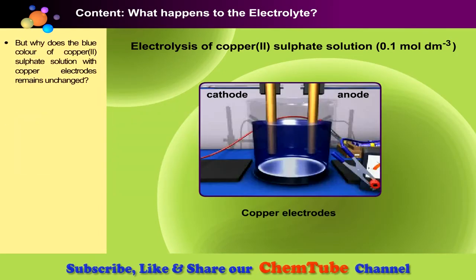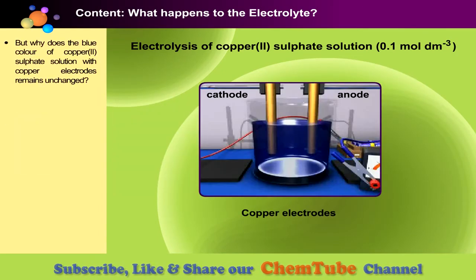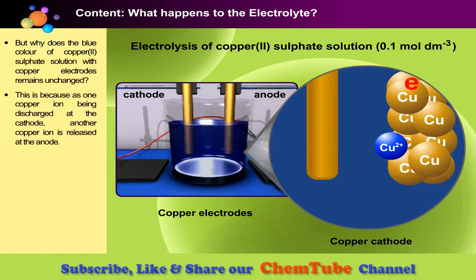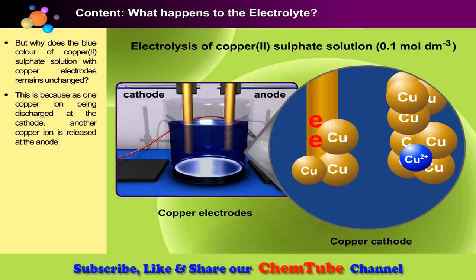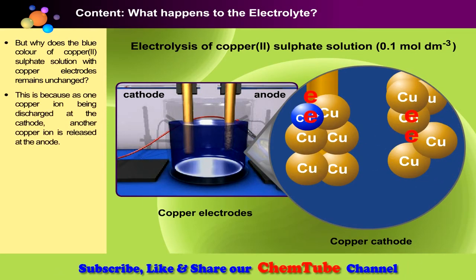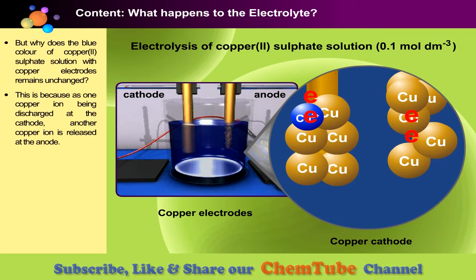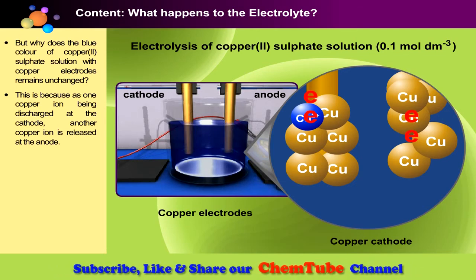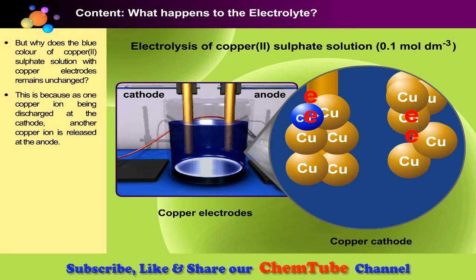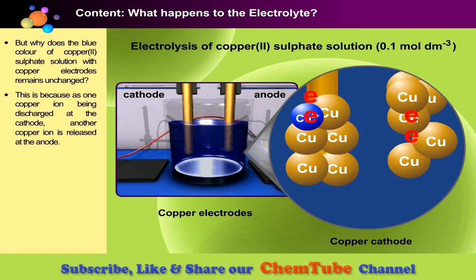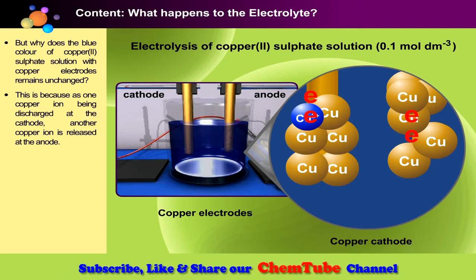In the electrolysis of copper sulfate where copper metals are used as electrodes, copper ions are selectively discharged as well, but the blue colour of the copper sulfate solution remains unchanged. Why? As one copper ion is discharged at the cathode, another copper ion is released at the anode. Thus, the concentration of copper ions in solution remains constant.